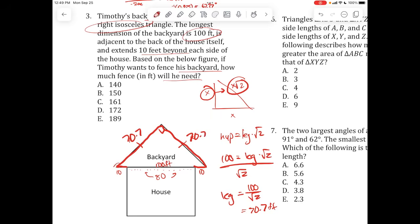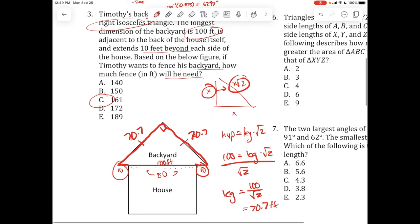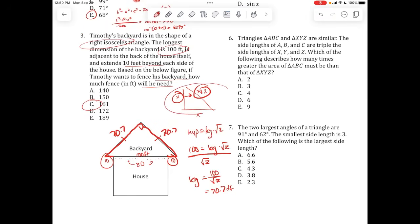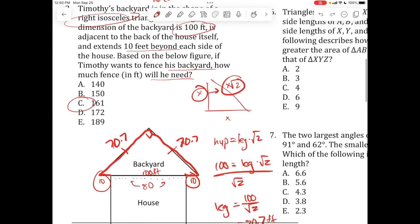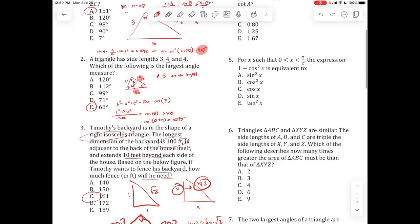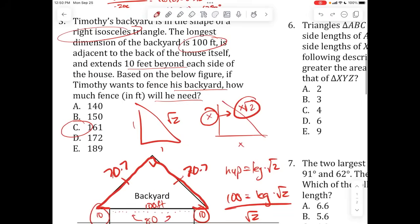So leg is going to equal 100 divided by square root of 2. 100 divided by square root of 2 is 70.7. Now we know this is 70.7, this is 70.7. We know we have 10 and 10. So we can just do all the addition. You end up with about 161. So it's 161 feet of fencing. Pretty simple. You just got to remember your right isosceles triangle. Another way to remember it is you have 1, 1, and square root of 2. It's also known as the 45-45-90 triangle.